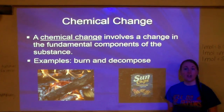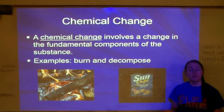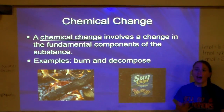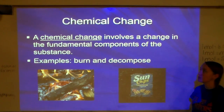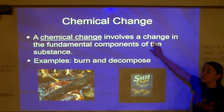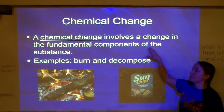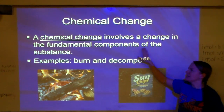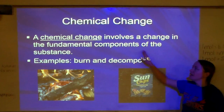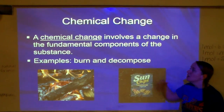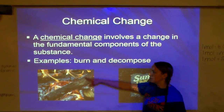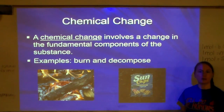Next is a chemical change. A physical change does not actually change the substance — for example, ice melting becomes liquid water, but it's still water. A chemical change, though, means you're actually changing the substance. It involves a change in the fundamental components — the substance turns into something else. Examples would be burning: when I burn wood, it's no longer wood; what we're left with is ashes. We've decomposed it and broken it down.